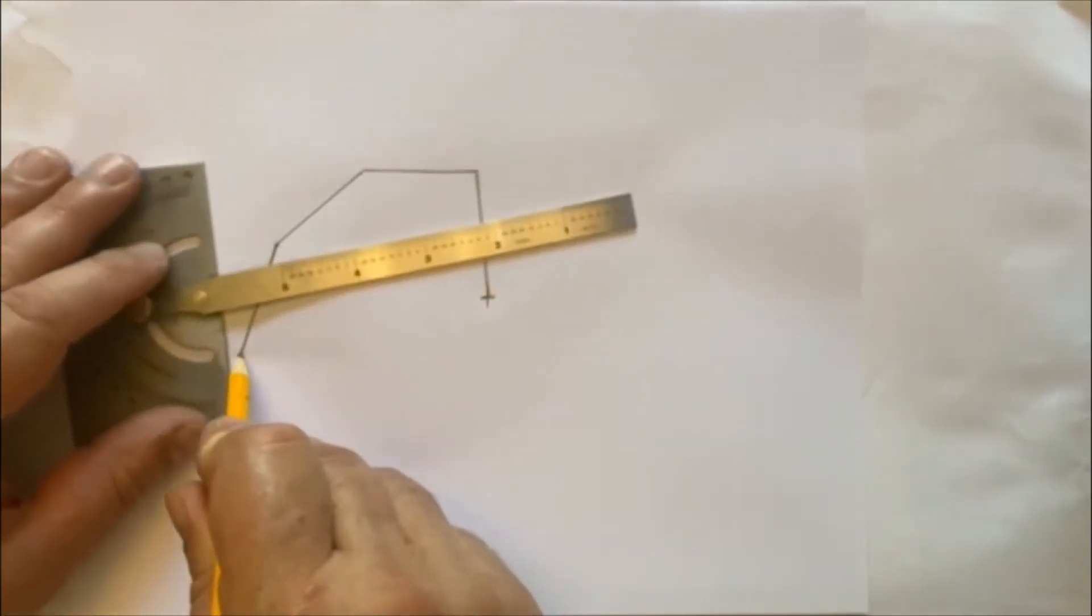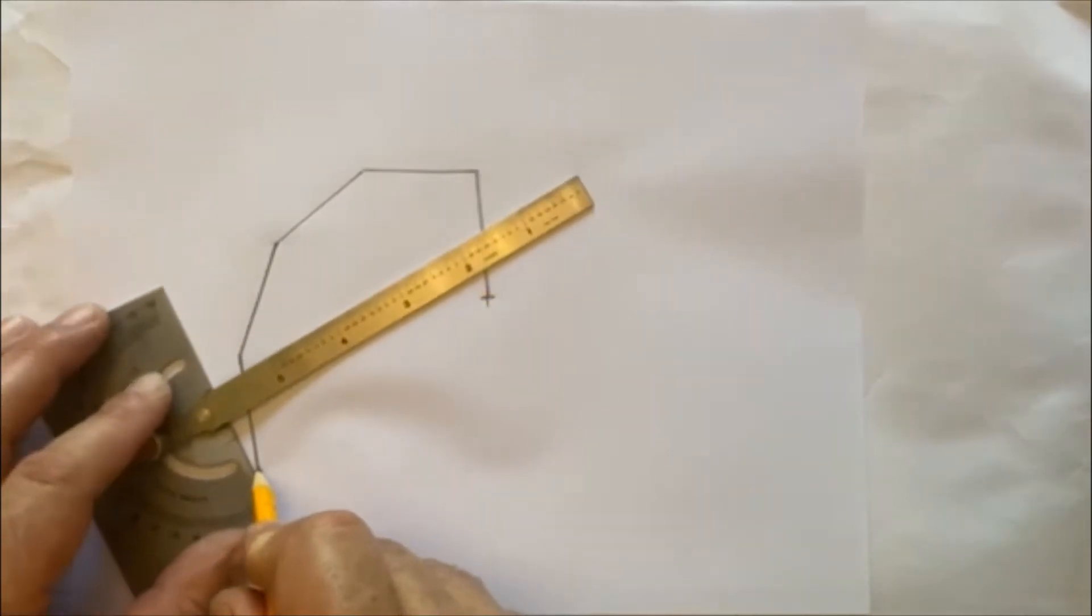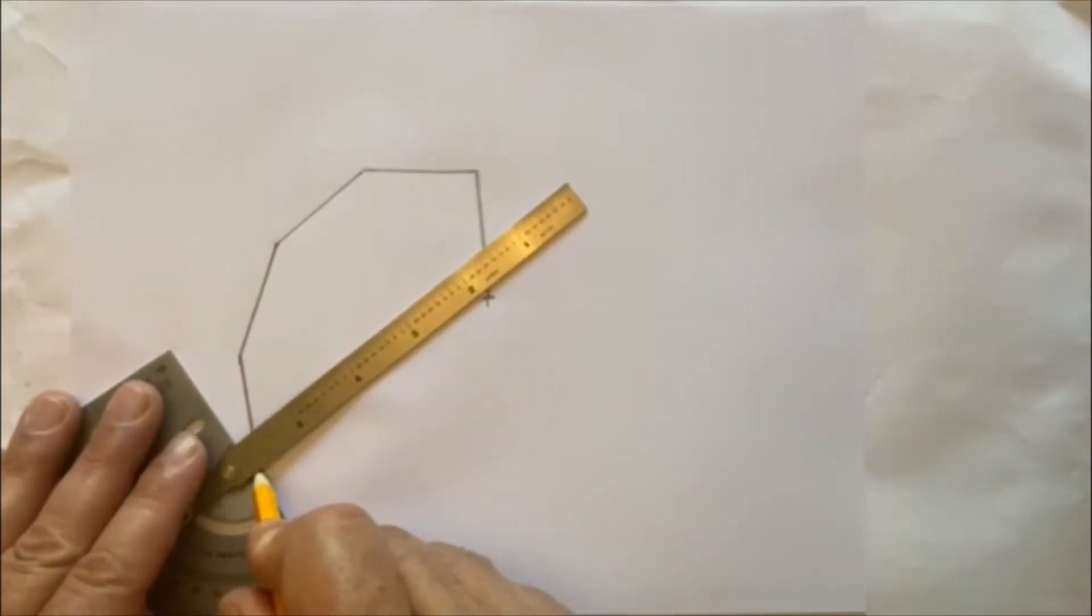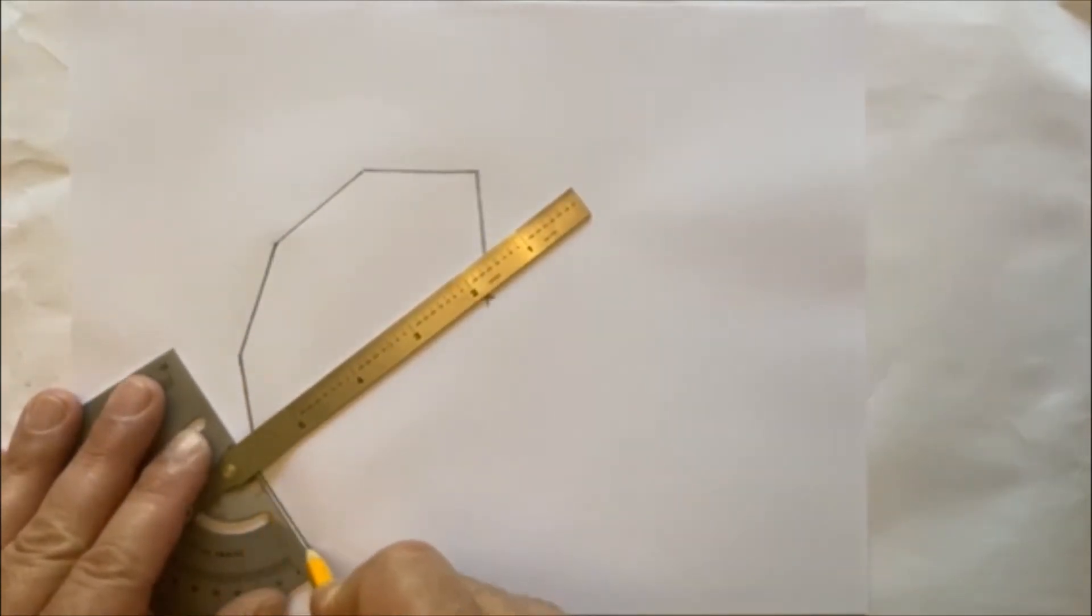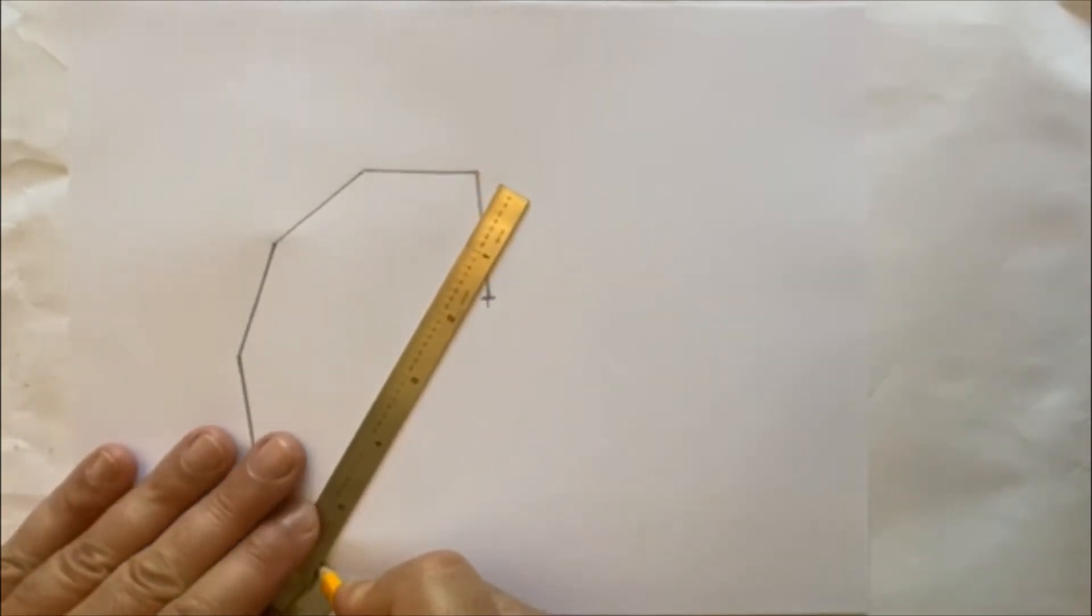Now, you always want the blade resting against the center point, and you want to draw the next angle from the point where the first angle stops. So, blade on the center point, draw. Blade on the center point, draw.